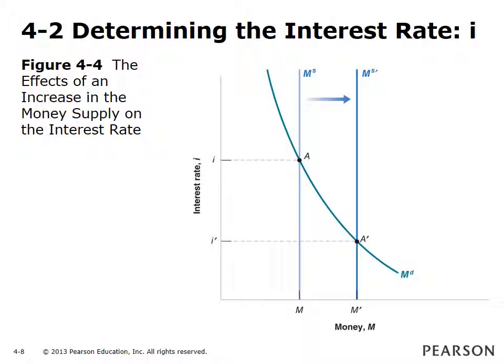Interest rates on bonds and their prices vary inversely. The price of bonds is determined in the bond market, and interest rates are then inferred from that. A bond which is worth $100 in one year will yield an interest rate depending on the price it sells for, represented by Pb: i equals ($100 minus Pb) divided by Pb.